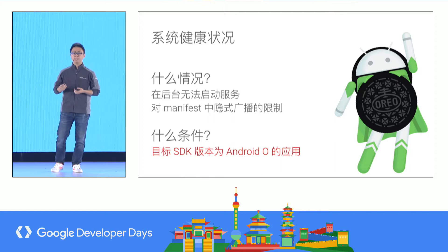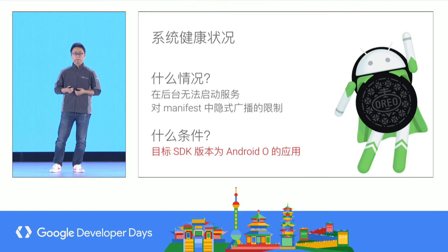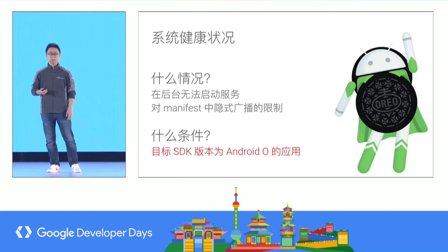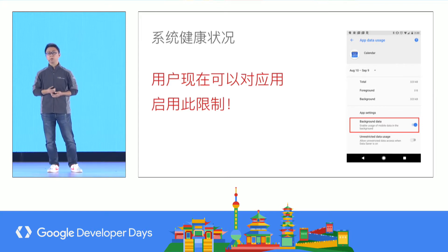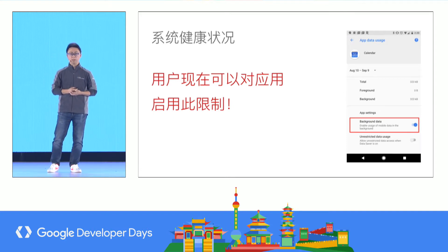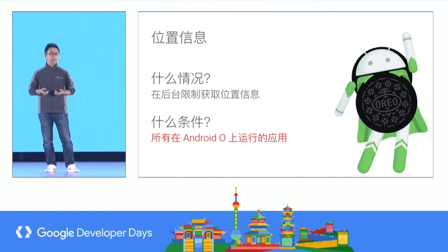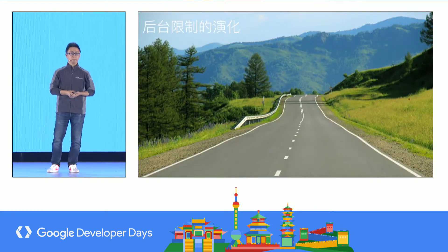The background cannot start a service, but the foreground can. We also do not support some implicit broadcasts registered in the manifest. There is some good news: when the application's target SDK is older, users can enter system settings to limit the app's background working ability. And third, some background applications will be limited in acquiring location. All applications on Android, regardless of target SDK, will be subject to this location limitation.